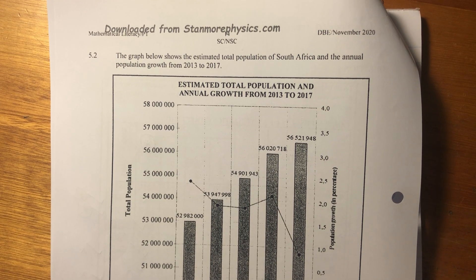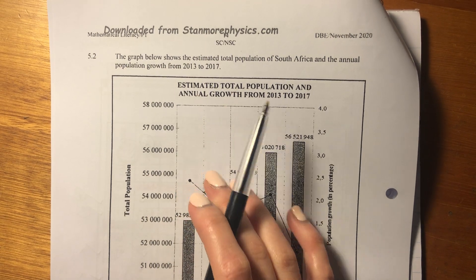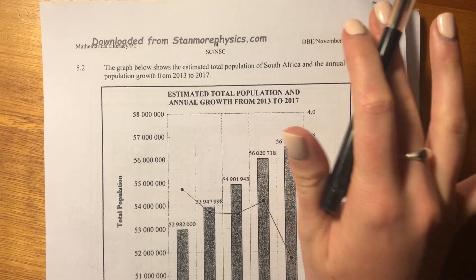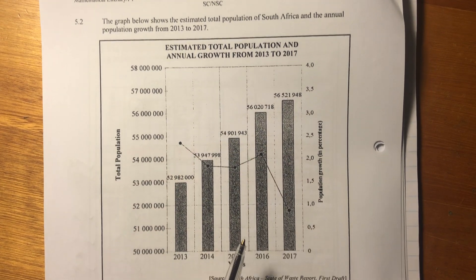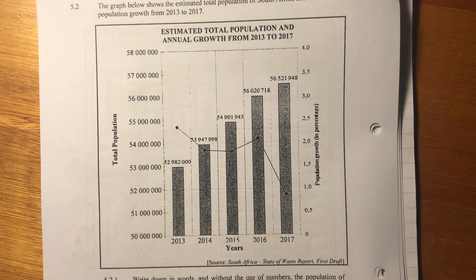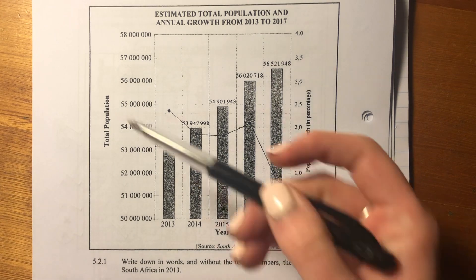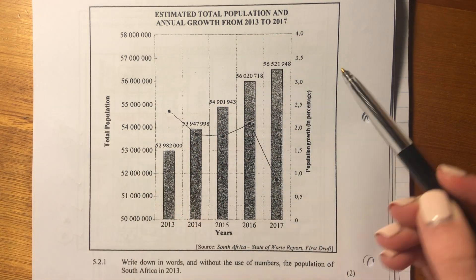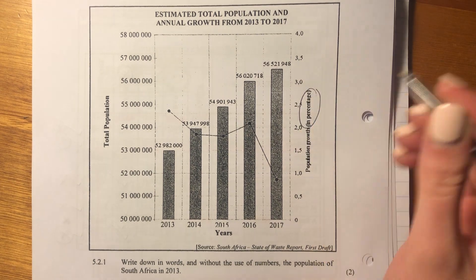Let's now finish off the paper with 5.2. It says the graph below shows the estimated total population of South Africa and the annual population growth from 2013 to 2017. It's quite an interesting graph because it's actually got two axes — one over here which is the total population, and the one over here is the population growth, which is a percentage.